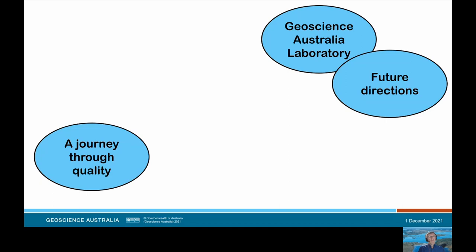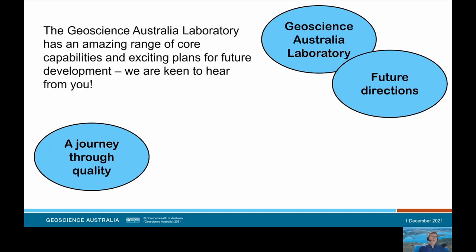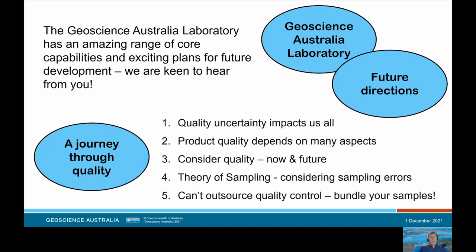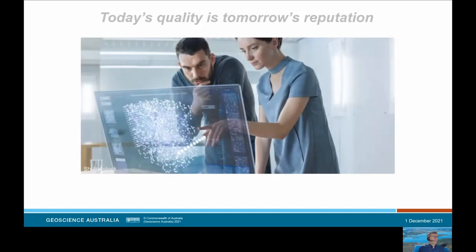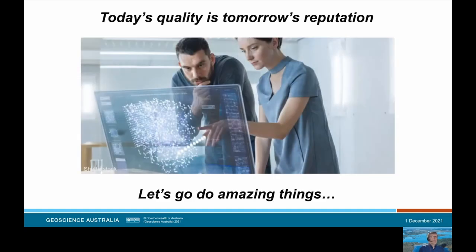This draws our story about the present Geoscience Australia Laboratory, our focus on quality, and future directions to a close. I hope this has been a useful insight into the capabilities and future direction of the laboratory. We have an amazing range of core capabilities and exciting plans for development. We're keen to hear from you if there are opportunities for collaboration or if you want to talk more about quality management. I hope the key takeaway messages from the journey through quality are useful to you — and the laboratory team are happy to discuss these further at any time. So let's go do some amazing things out there. Today's quality is tomorrow's reputation.